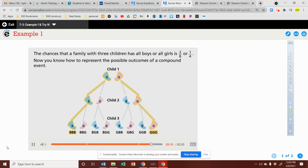The chances that a family with three children has all boys or all girls is two out of eight, or one-fourth.